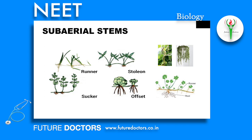Trailers trail along the surface and do not climb up. Runners are sub-aerial weak stems that grow horizontally along the soil surface. Examples include Cynodon, Centella, Oxalis, etc.